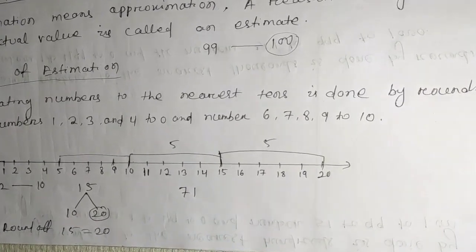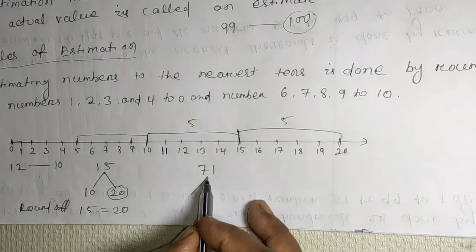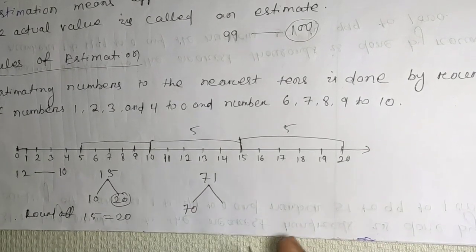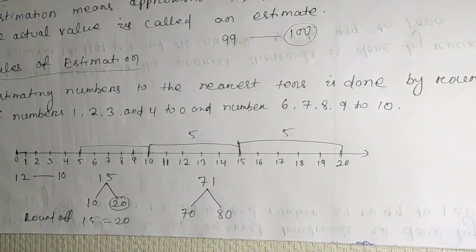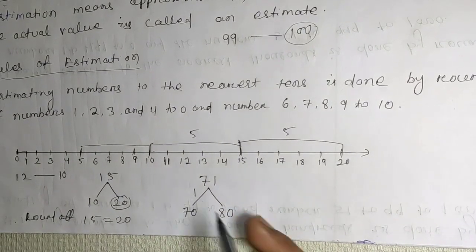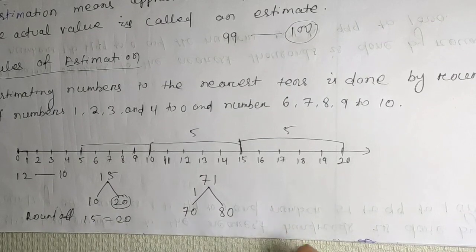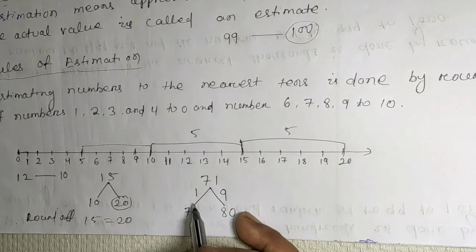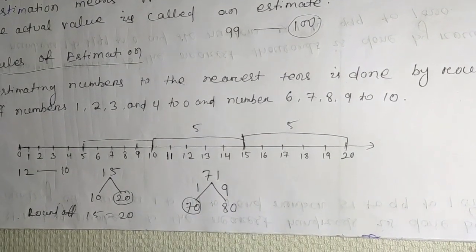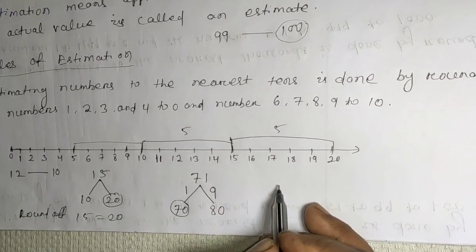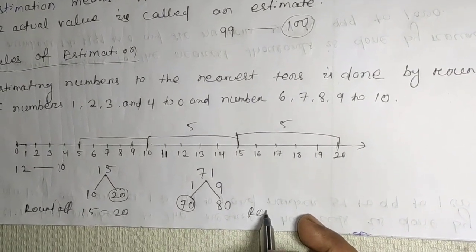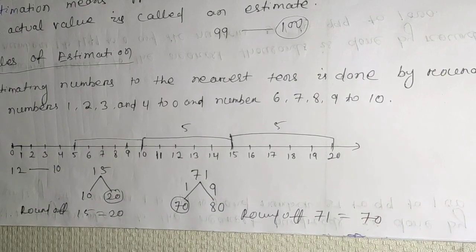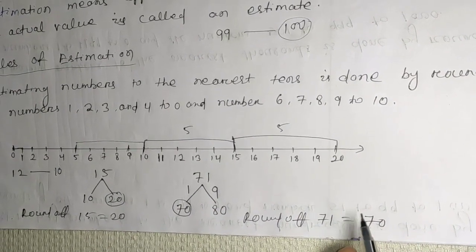Suppose 71. First, see the difference: 71 lies between 70 and 80. The difference between 71 and 70 is 1, and the difference between 71 and 80 is 9. So the nearest is 70. Therefore, round off of 71 is 70.